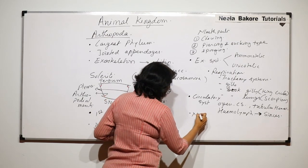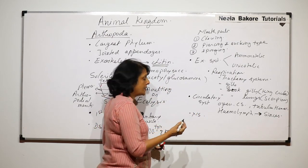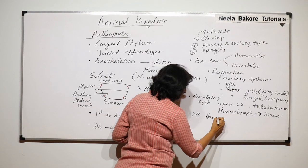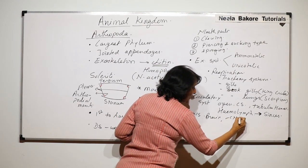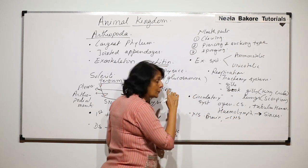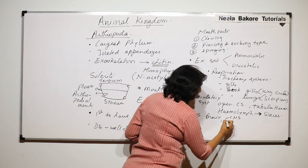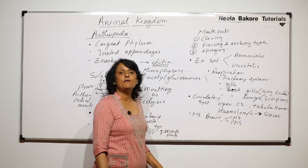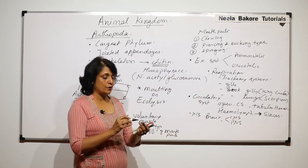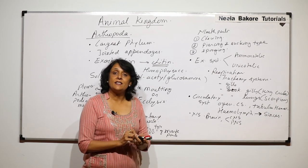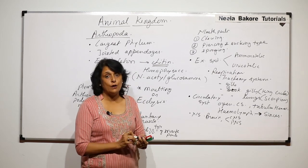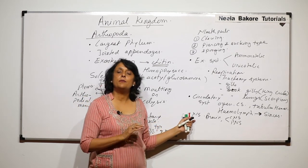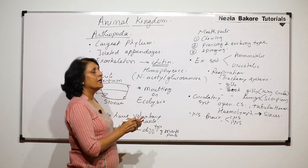The nervous system is also well developed. They have a rudimentary brain, a CNS which includes the brain and the nerve cord, and a PNS (peripheral nervous system) made up of various kinds of nerves. Basically all the systems are pretty well developed.